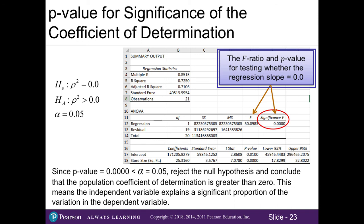We can also simply read the p-value in our Excel output. The 'Significance F' is our p-value — the observed significance — which is 0.0000, a very small number. Because this p-value is smaller than our alpha of 0.05, we reject the null and can conclude that the population coefficient of determination is greater than 0. This means our independent variable, square footage of store size, explains a significant proportion of the variation in our dependent variable, average monthly sales.